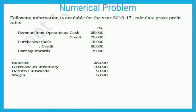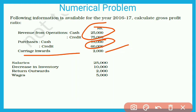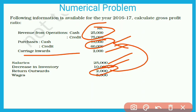See one more question. The following information is available for the year 2016-17; calculate gross profit ratio. Revenue from operations includes both cash and credit, which we add for the total. Purchases include cash and credit components. Carriage inward is given as a direct expense. Salary is given, decrease in inventory is given, return outward is the purchase return which we deduct to get net purchases, and wages are also a direct expense.